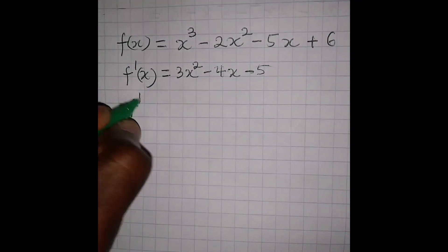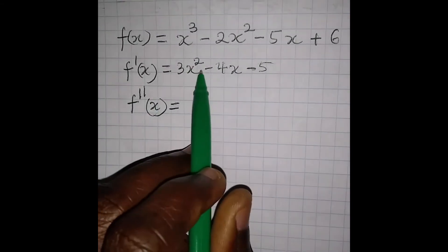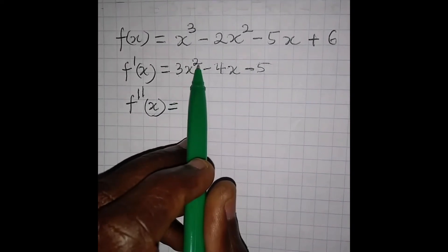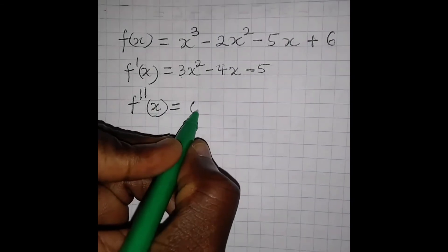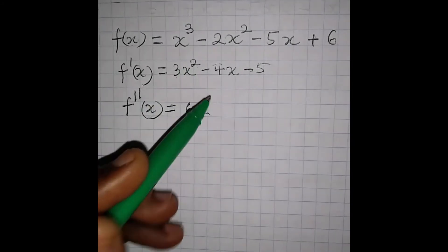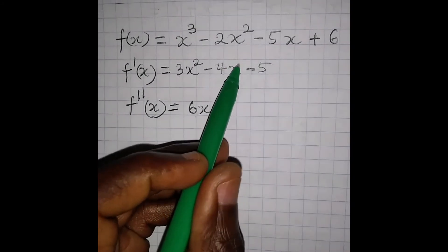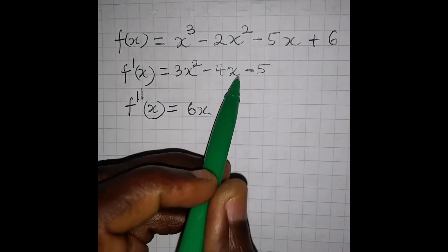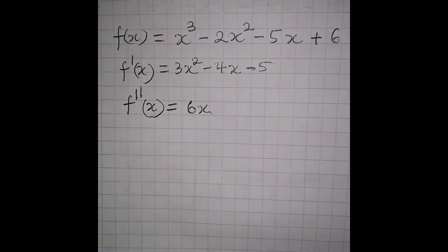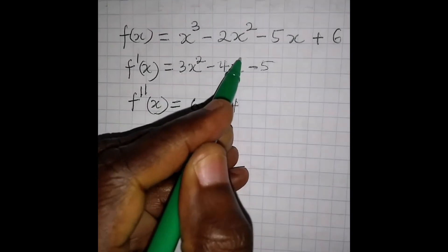Now if you want to find the second derivative, we write f double prime of x, then we apply the same rule: the power times the coefficient. So 2 times 3 gives us 6, and then x — we subtract 1 from the power, so 2 minus 1 is 1, meaning x has the power of 1. Then 1 times minus 4 gives us minus 4, and subtracting 1 from the power gives us 0, so x to the power of 0 is 1.